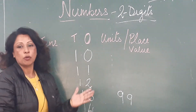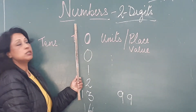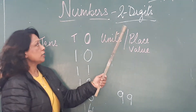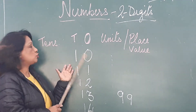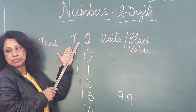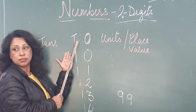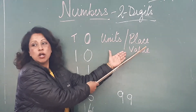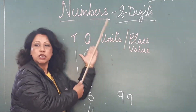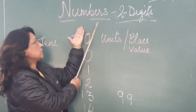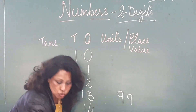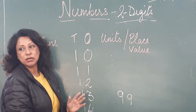Let me repeat today's topic: today's topic is on numbers. Numbers are also called digits. We are starting with two digit numbers — two digit means you have two numbers. The first digit is called ones and the second digit is called tens. Ones and tens are called units or place values. Unit and place value mean the same, just as numbers and digits mean the same.